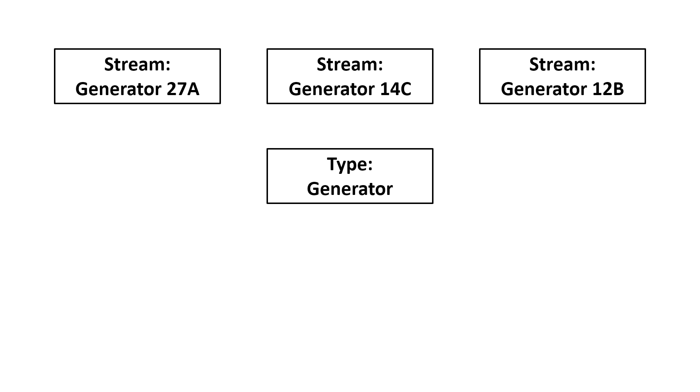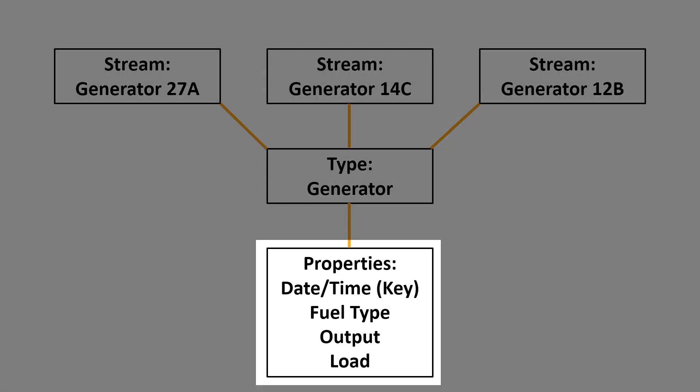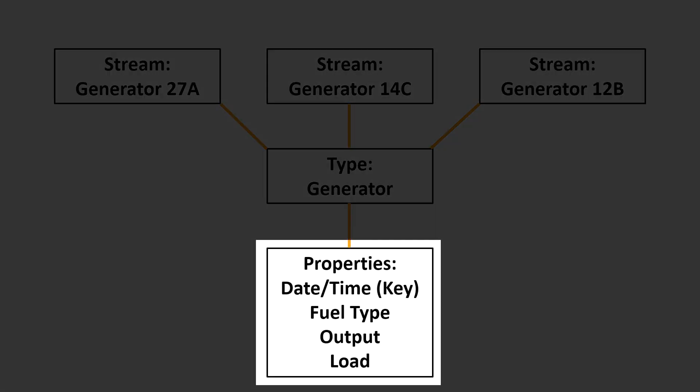You can base multiple streams on a single type. Within each type, you define properties, which are the data elements you intend to stream.